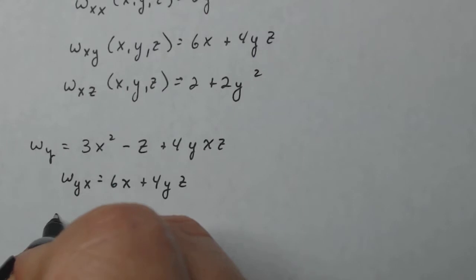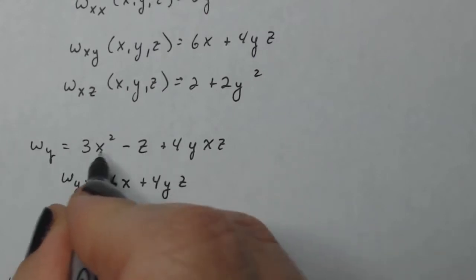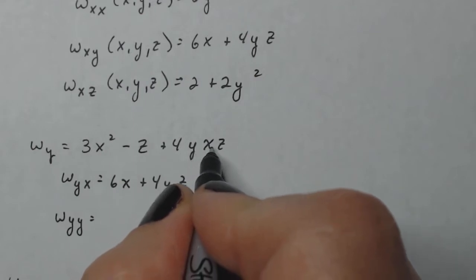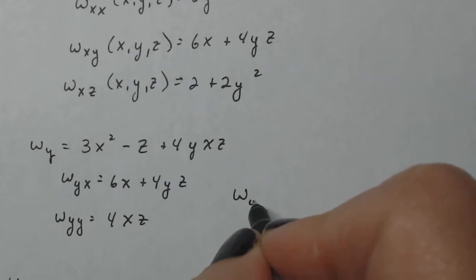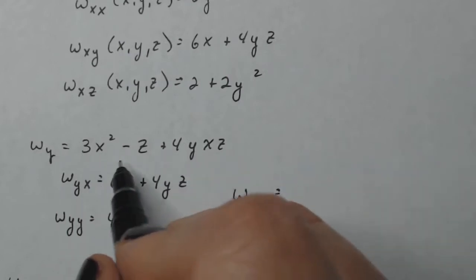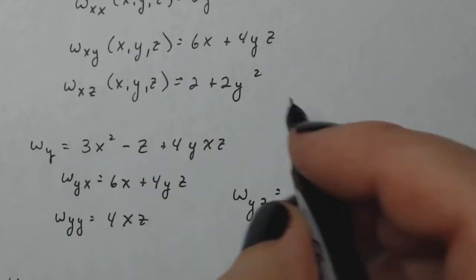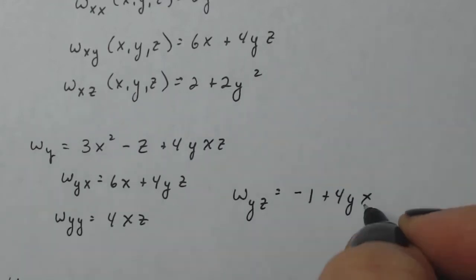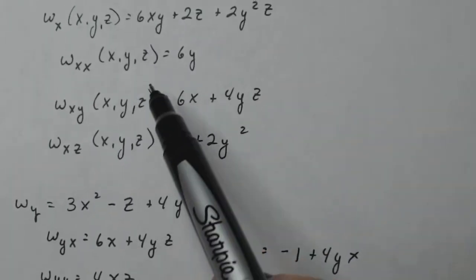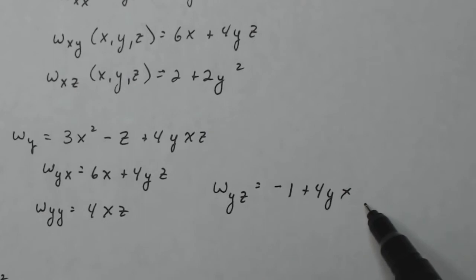And then W sub Y Y, no Y, no Y, this should be four X Z and then W sub Y Z. Now I don't have a Y Z to compare up here. So I don't know. We're just going to leave it like that.